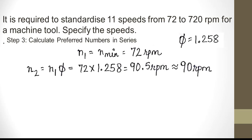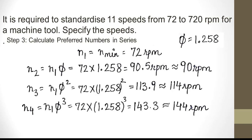n3 = 72 × 1.258² = 113.9, rounded to 114 rpm. n4 = n1 × φ³ = 72 × 1.258³ = 143.3, rounded to 144 rpm. n5 = n1 × φ⁴ = 72 × 1.258⁴ = 180.3, rounded to 180 rpm.